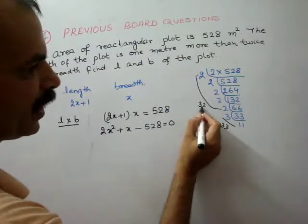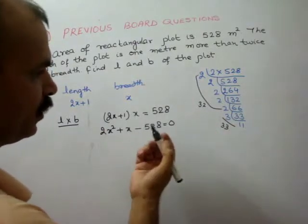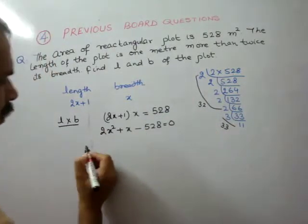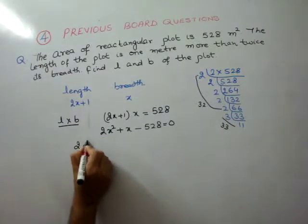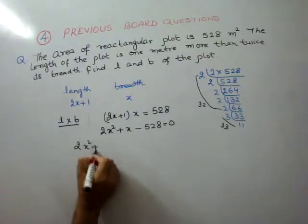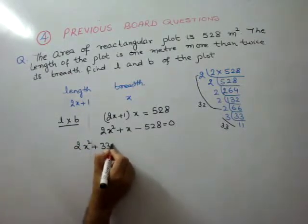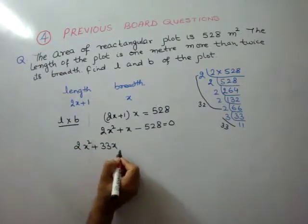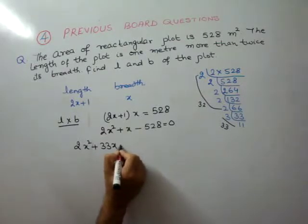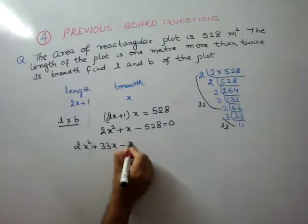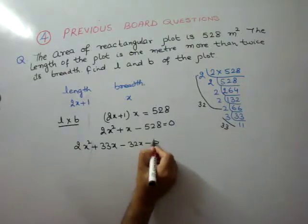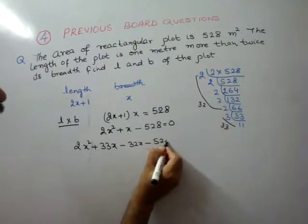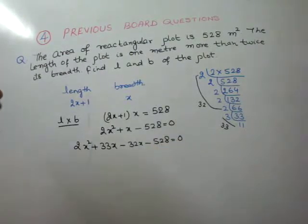So now we split the middle term: 2x squared plus 33x minus 32x minus 528 is equal to 0. Here 33 minus 32 is 1, which matches our middle term coefficient.